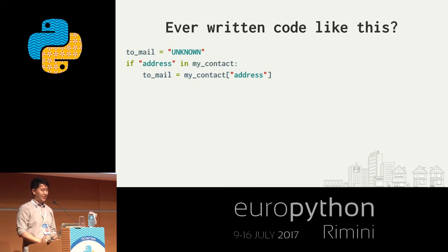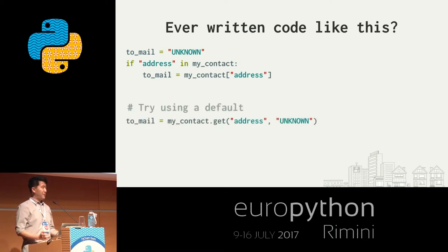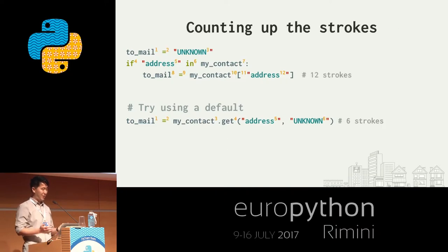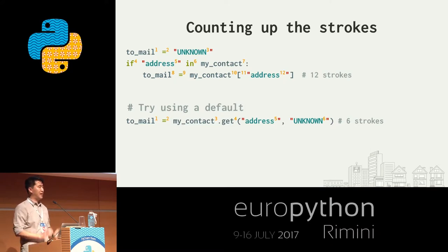Have you all seen code like this? You pull out the address field from a `my_contact` dict, set unknown as your default, and if it actually exists, replace the unknown with a particular value. That took a long time to explain. Python has this wonderful feature where you can just say: get this attribute out of a dict and give it a default value if it's not there. This is way shorter — I can describe exactly what it does in about eight words. Counting strokes: the verbose version is about 12 strokes, while the `.get()` version is only 6.